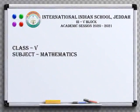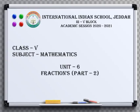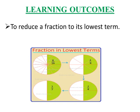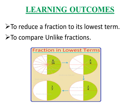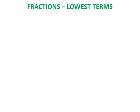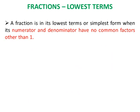Good morning, children. Welcome to Class 5 Mathematics, Unit 6, Fractions Part 2. Today we are going to learn fractions in lowest terms and comparing unlike fractions. Our learning outcomes are to reduce a fraction to its lowest term and to compare unlike fractions.